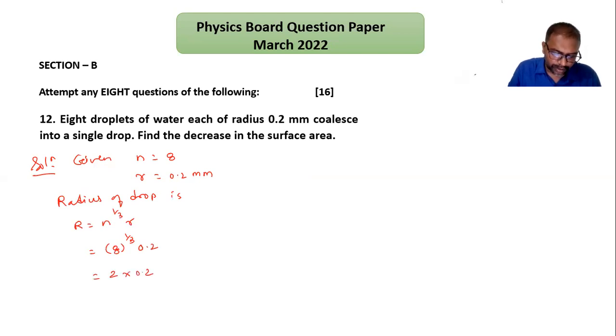In meters we can write 0.4 times 10 raised to minus 3 meters, or 4 times 10 raised to minus 4 meters. This is capital R.